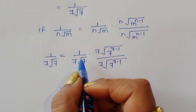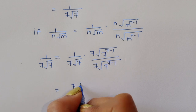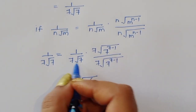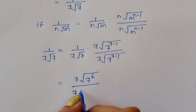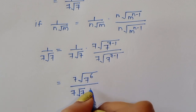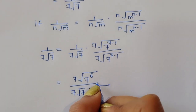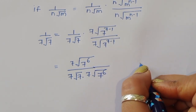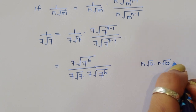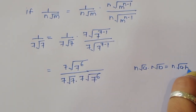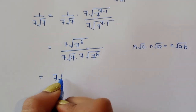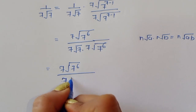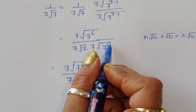Multiplying through, we get the 7th root of 7^6 in the numerator. For the denominator, using the rule that nth root of a times nth root of b equals nth root of (a times b), we combine the 7th root of 7^1 and 7th root of 7^6, giving the 7th root of 7^(1+6), which is the 7th root of 7^7.